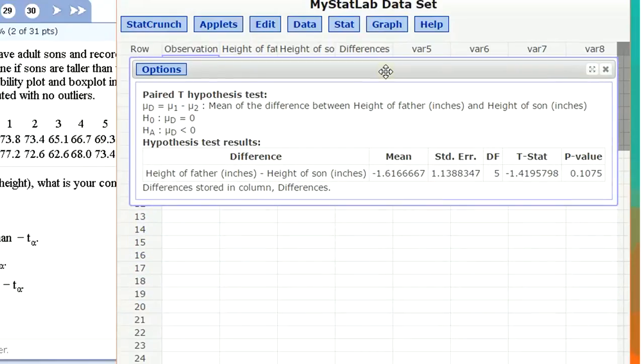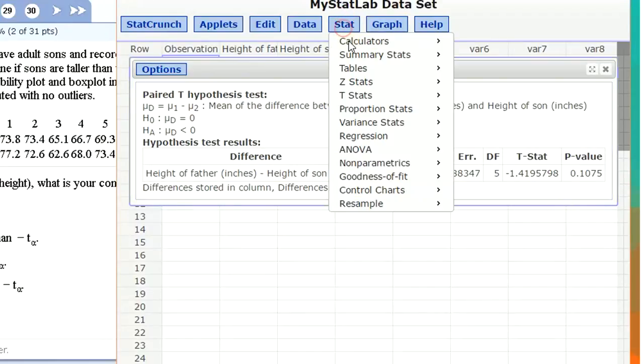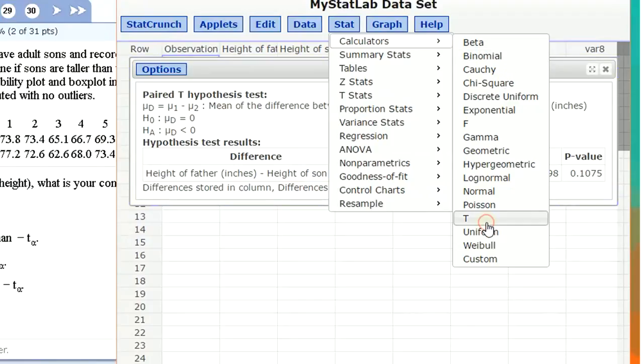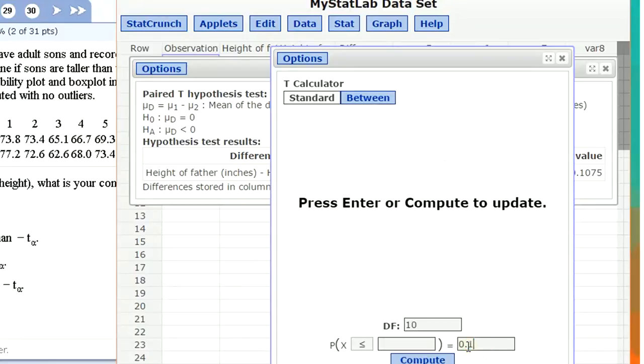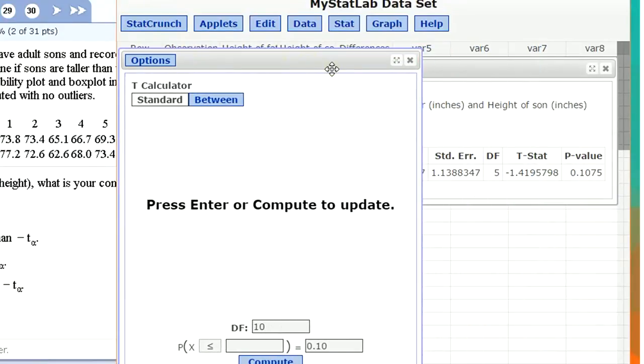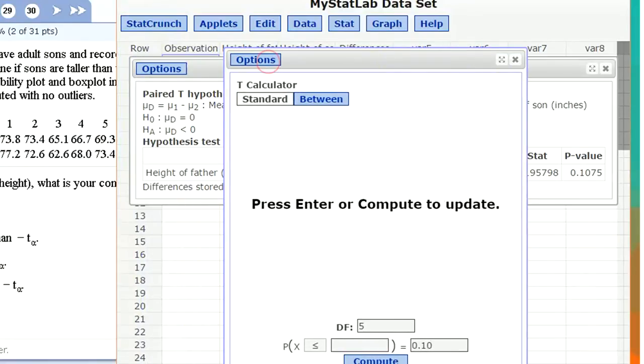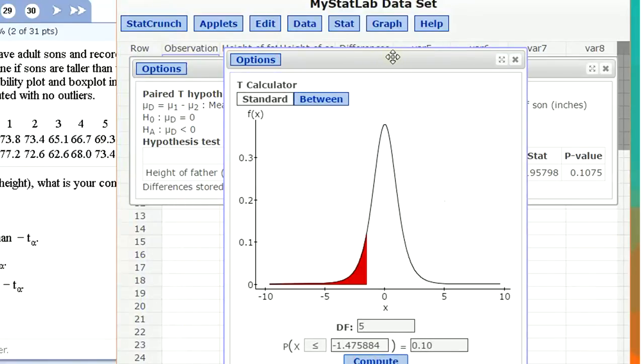Anyway, we've got a p value of 0.1075. That's just over my alpha level of 0.1. If we were to go to the calculator for the t distribution and for a left tail test, with 0.10 in the tail and degrees of freedom of five, I'll put in five for the degrees of freedom and I'm going to click compute. This is telling me that the critical value is negative 1.475.